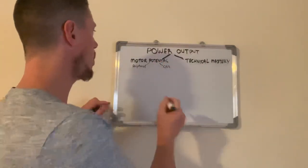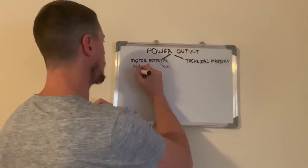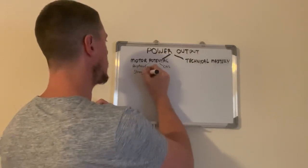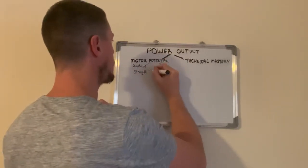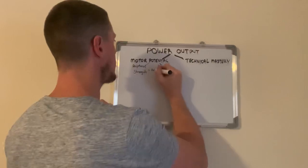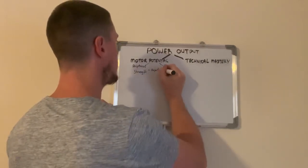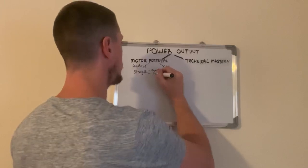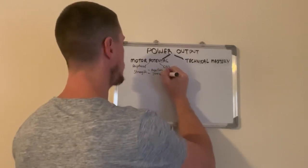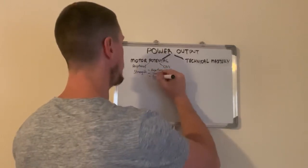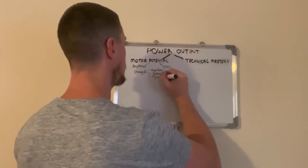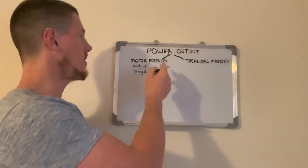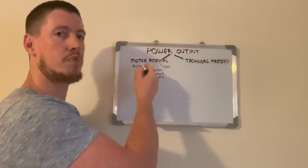Basically, we try to increase our motor potential using strength training. Typical strength training would be things like the repetition method, the strength method, and the dynamic method. All these things can give us CNS factors and peripheral factors.